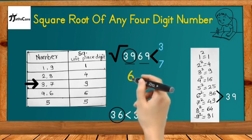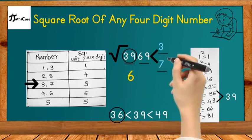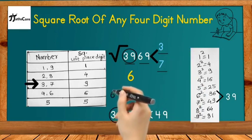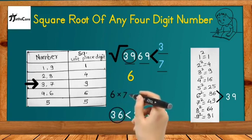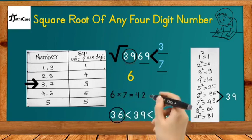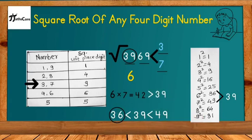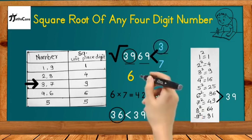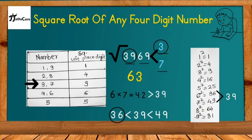Now we need to finalize whether 3 or 7 comes at the unit place. Multiply 6 by its consecutive number 7: 6 × 7 = 42. Compare 42 with 39: since 42 > 39, meaning 39 < 42, we select the smaller number between 3 and 7, which is 3. So 3 is the unit place digit, and the final answer is 63 — the square root of 3969.